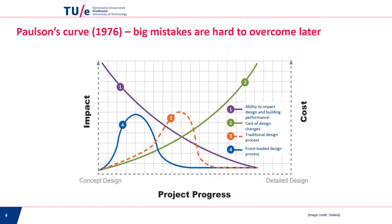There is a real push, for many years already, to move the application of building performance simulation earlier in the design process — from a more traditional design process to a front-loaded design process, where the left-hand side refers to conceptual design and the right to detailed design. The main argument is that the ability to make changes is large in the beginning, and the cost of making changes increases toward detailed stages. So if we can apply BPS earlier, we can make better buildings and have them cheaper.